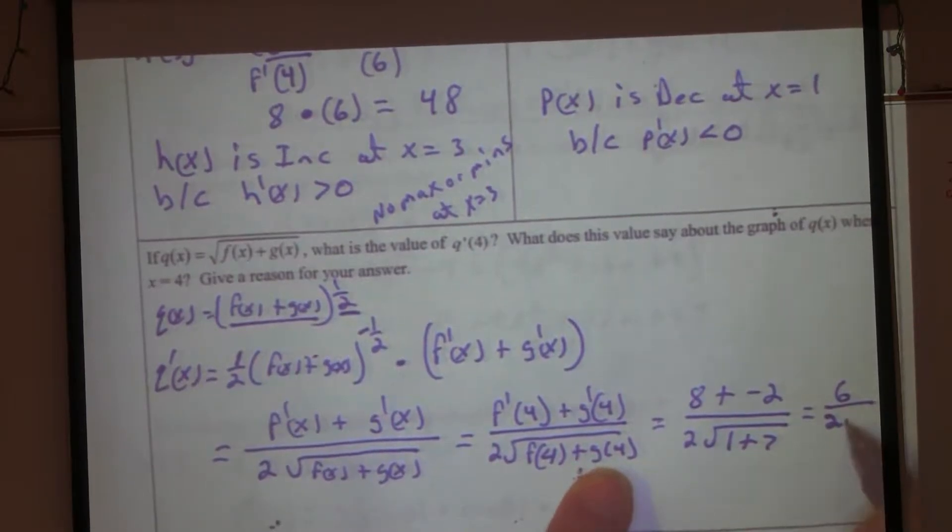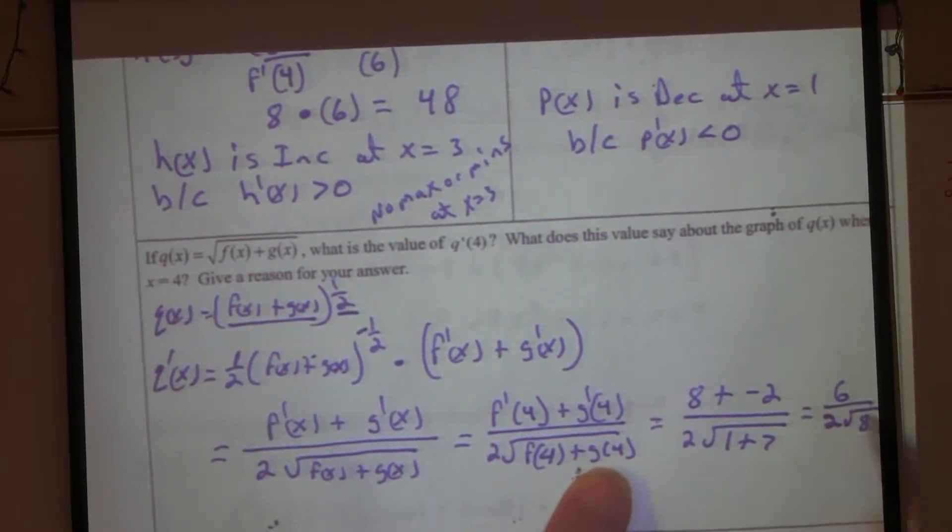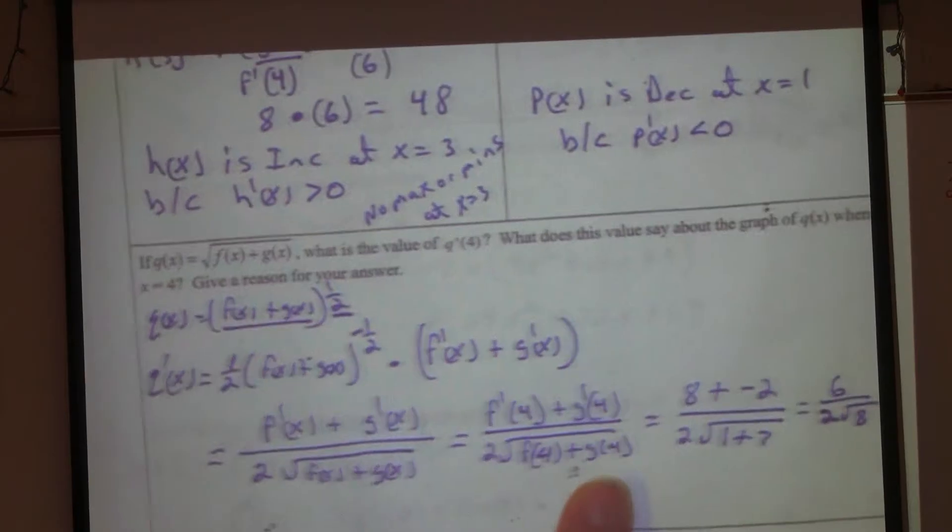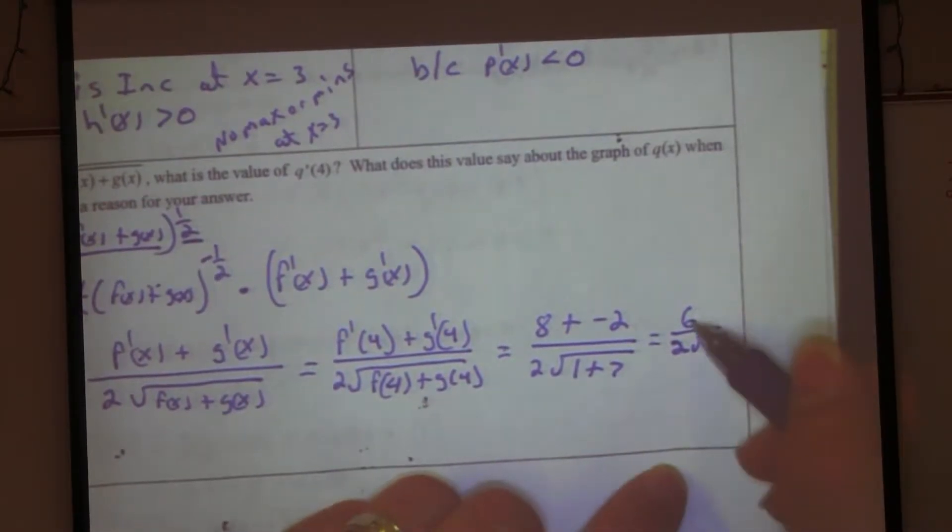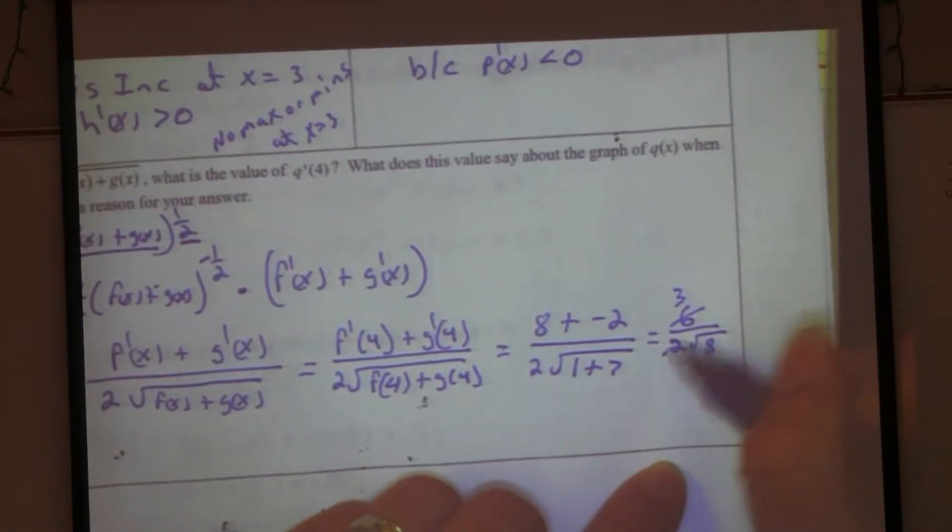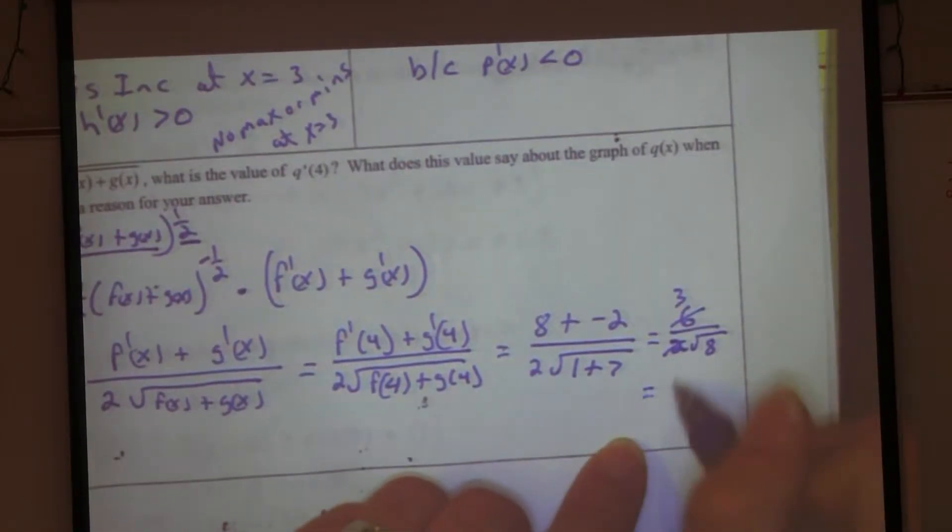So we end up with 6 on the top divided by what? 2. Square root of 8. Can I simplify something here? The 6 and the 2. That becomes a 3 and that goes away. This is really 3 over radical 8.